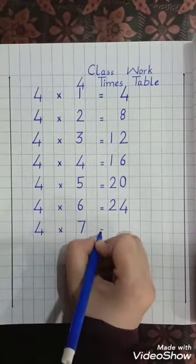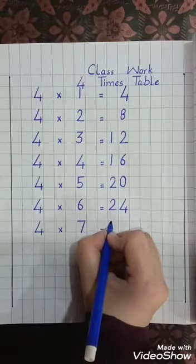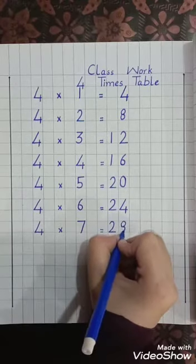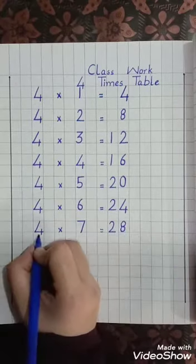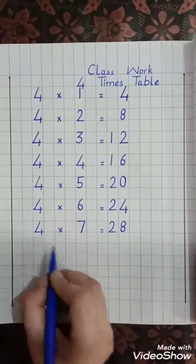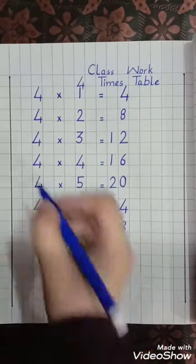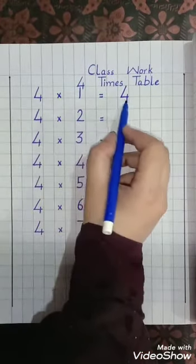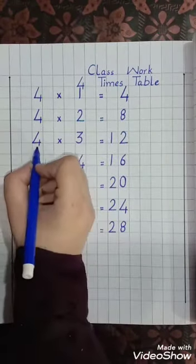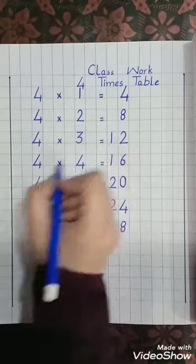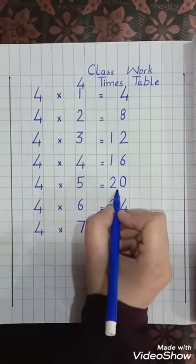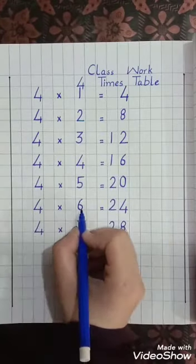Four, multiply, seven, equal lines — 28. Four sevens are 28. Four ones are 4, four twos are 8, four threes are 12, four fours are 16, four fives are 20, four sixes are 24, four sevens are 28.